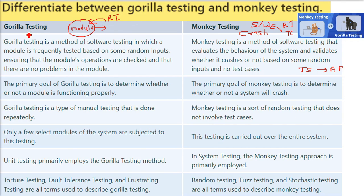In gorilla testing, the primary goal is whether a function is working properly or not. Monkey testing is whether a system or software is crashing or not, what is its behavior on random inputs.